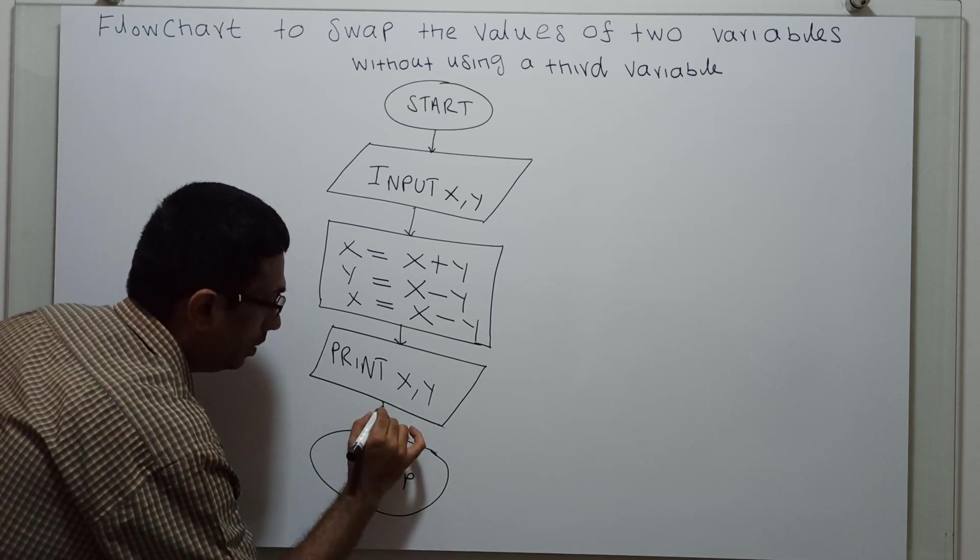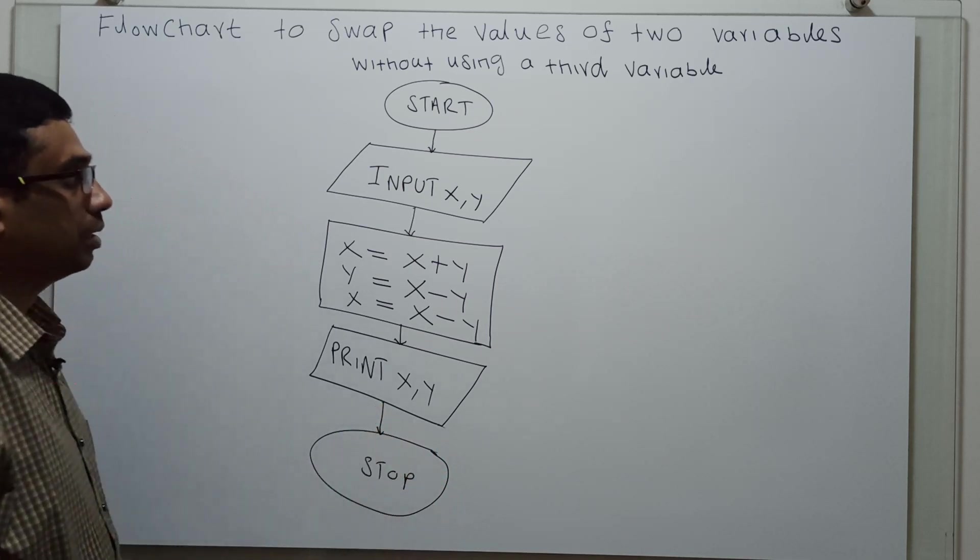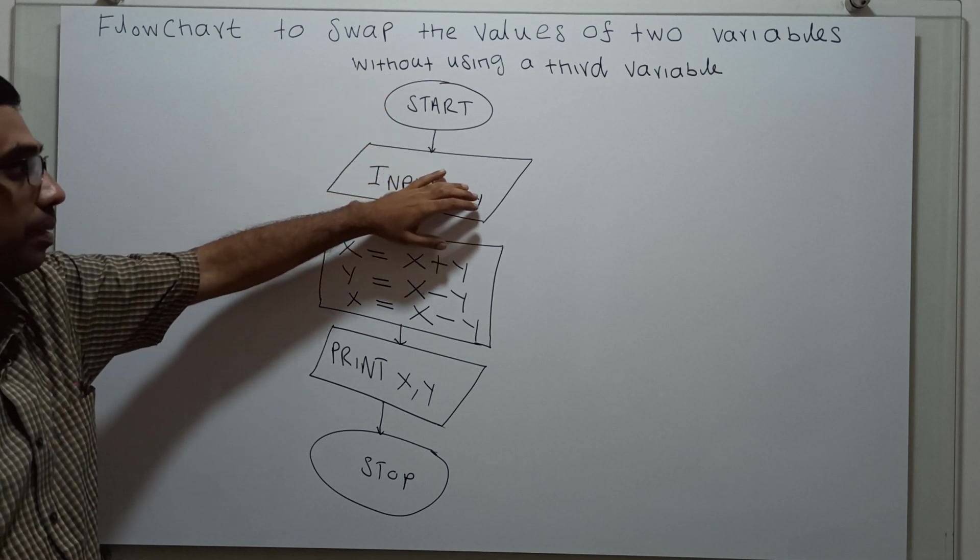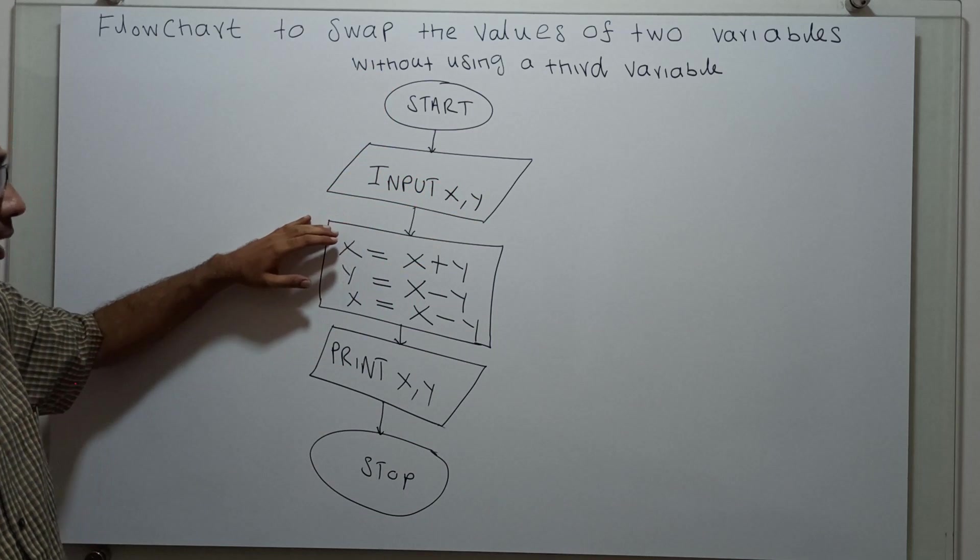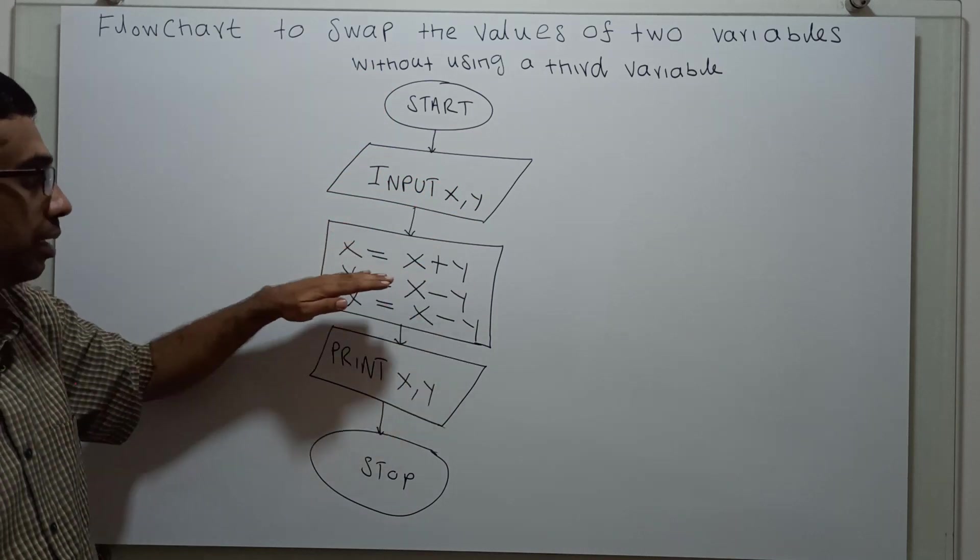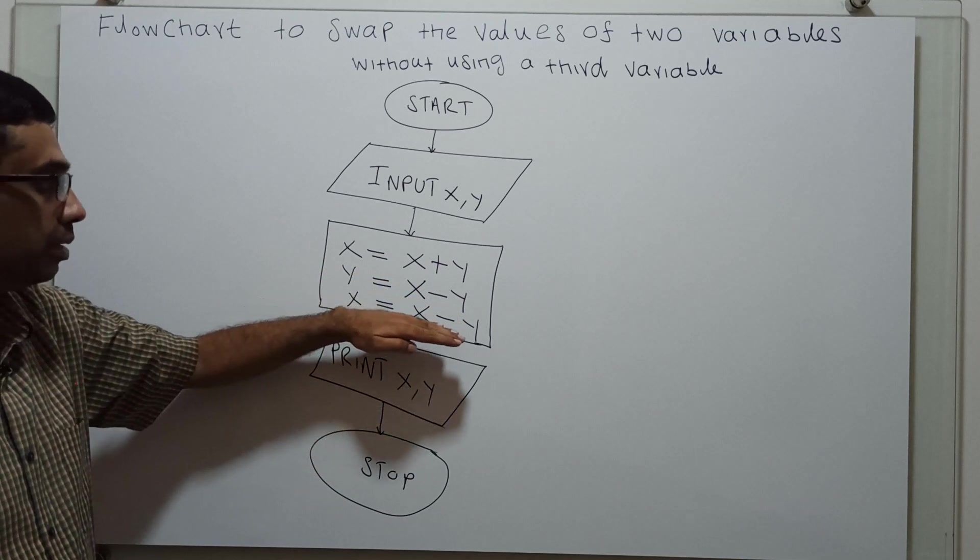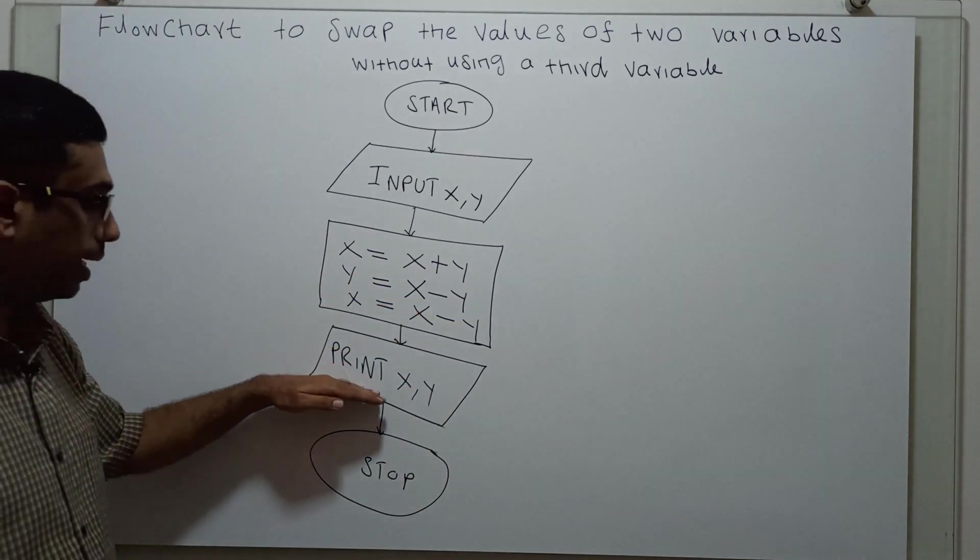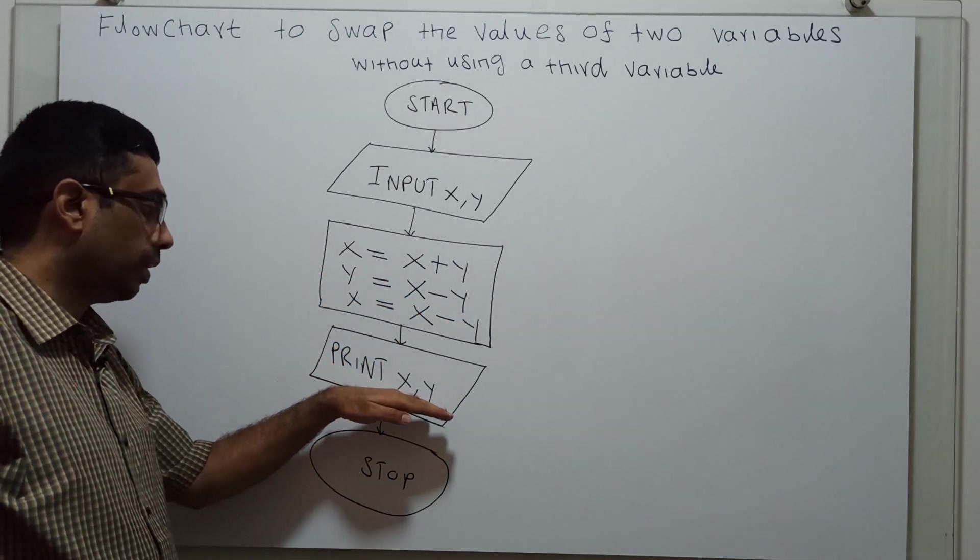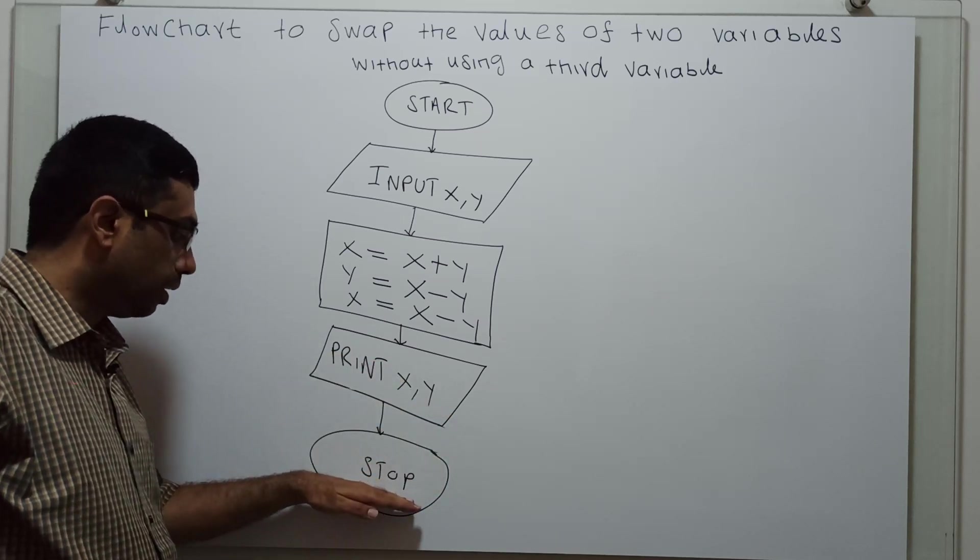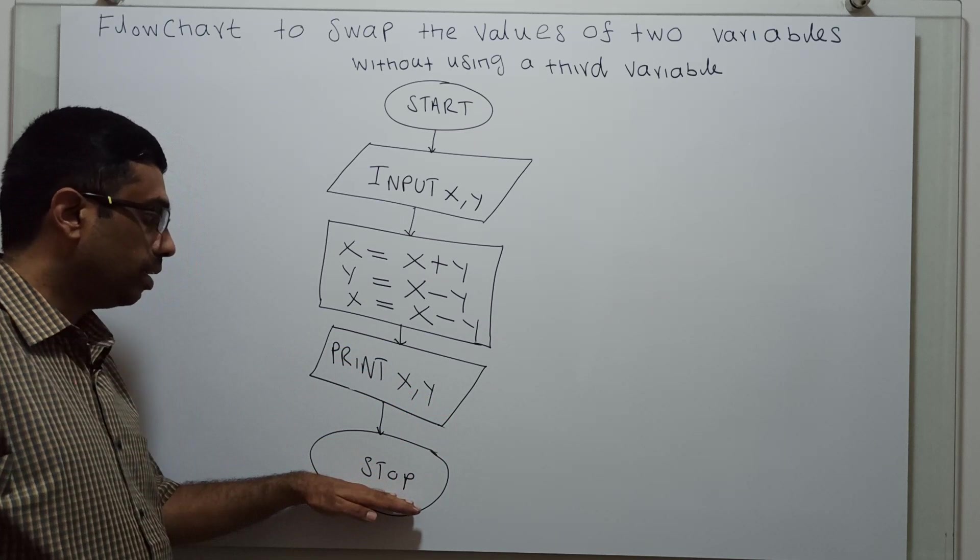Start: I am obtaining input in the variables x comma y. And I am calculating x equals x plus y, y equals x minus y, x equals x minus y. Again I am printing the value of x and y, and this is the logical stop of the flowchart.